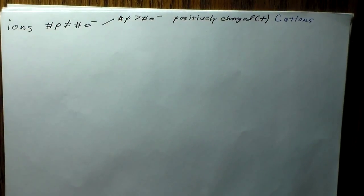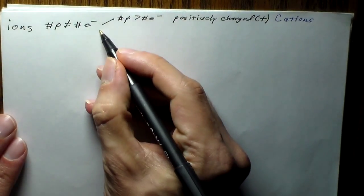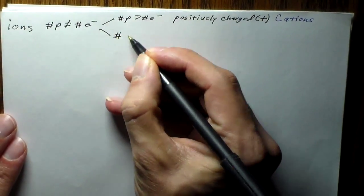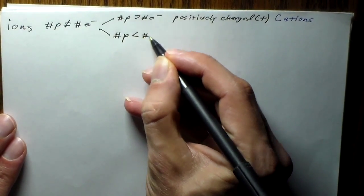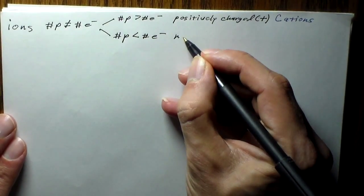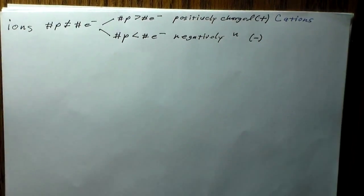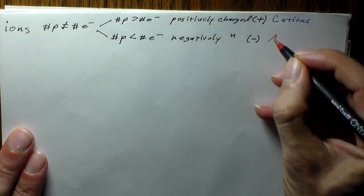The other possibility is if these things are negatively charged. Here the number of protons is going to be less than the number of electrons, so these are going to be negatively charged, and we term these anions.